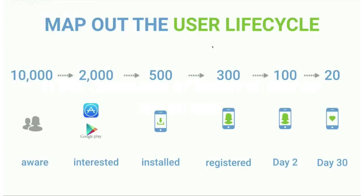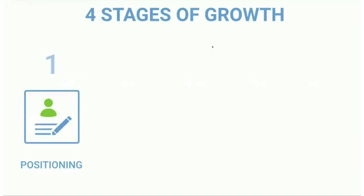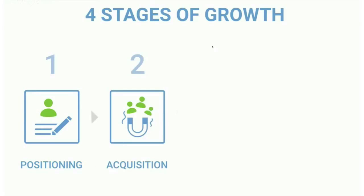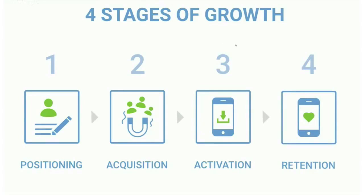The marketing system you need delivers results in a predictable and consistent manner by fixing the leakages at every stage of the funnel. You need to map out the user lifecycle: from 10,000 people aware of your app, 2,000 are interested, 500 install it, 300 register, 100 use it on day two, and only 20 use it on day 30. Your job is to fix those leakages at every stage.